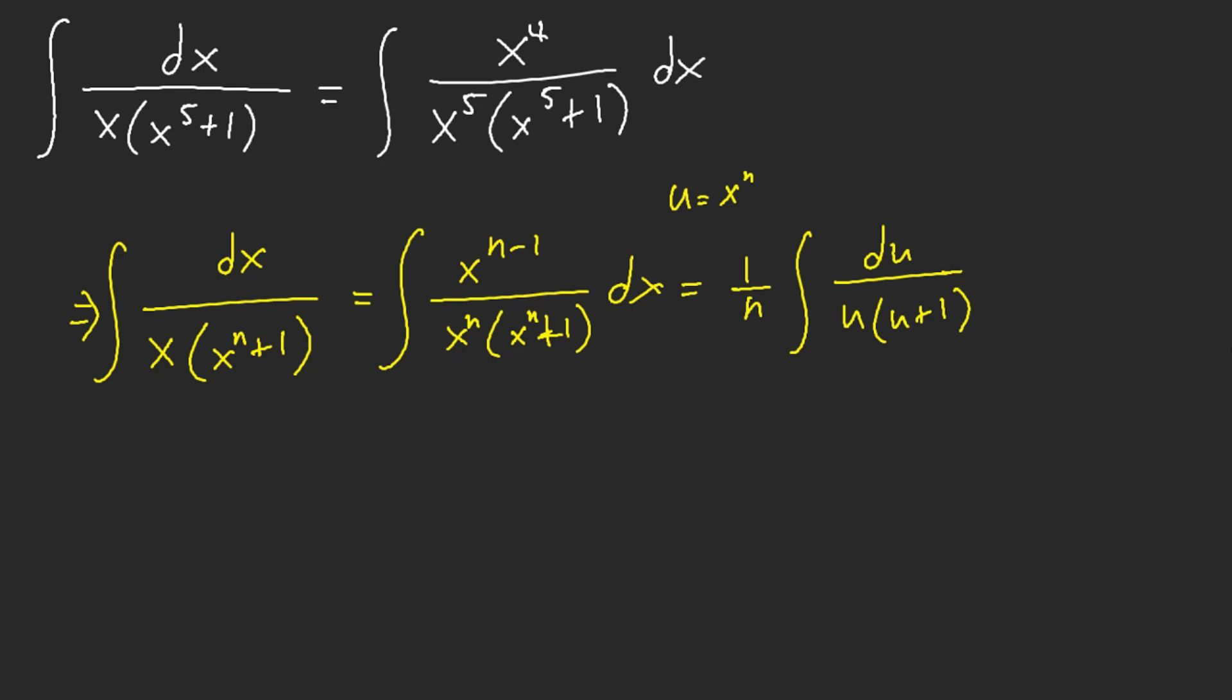u plus 1, and then do your simple partial fractions. Right, 1 plus u minus u, and then you would get something like this. Let's see, 1 plus u would be 1 over u minus 1. This and this would equal like ln of u over u plus 1, which is exactly what you should get.